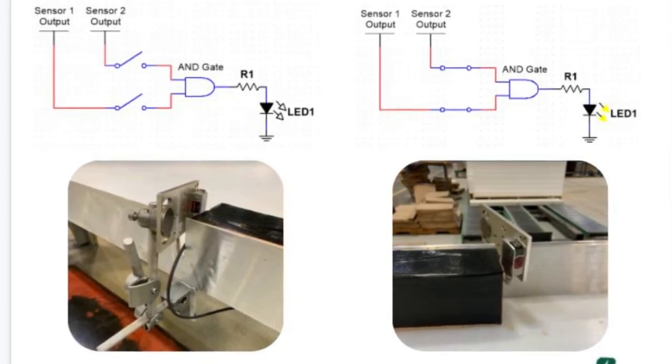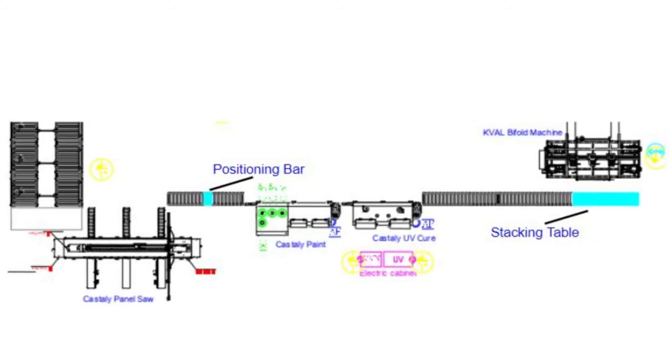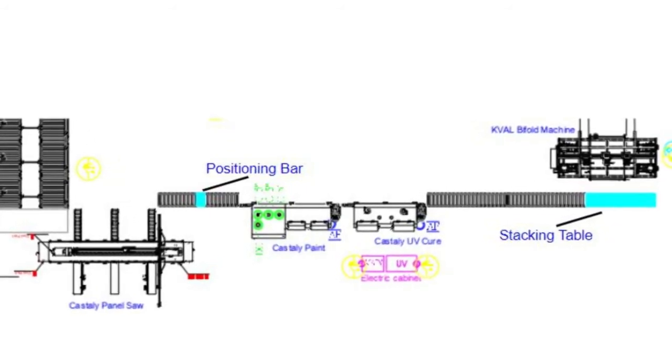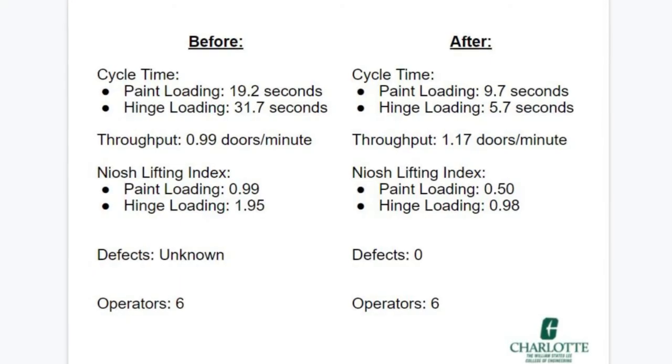Through the implementation of these designs, our team was able to make significant reductions to the cycle time for loading both the paint and hinge machines, increasing throughput by approximately 18%.